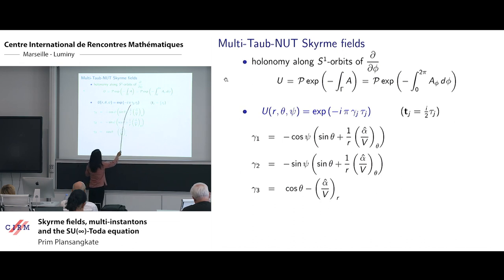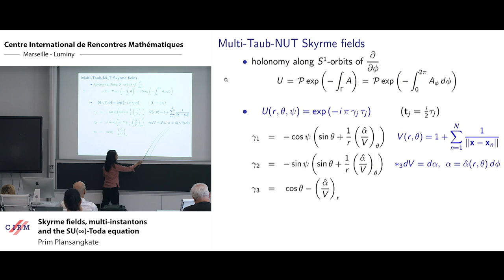This family of Skyrme fields include the Taub-NUT Skyrme field, which is reconstructed, where the expression simplifies because of much simpler V and alpha hat.